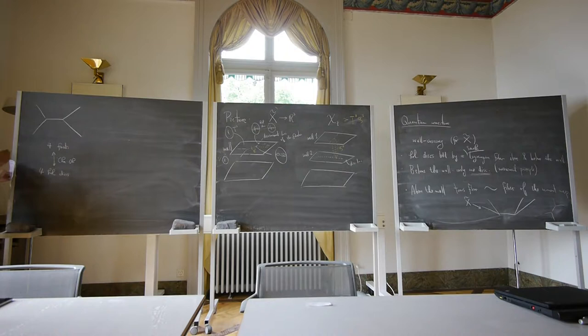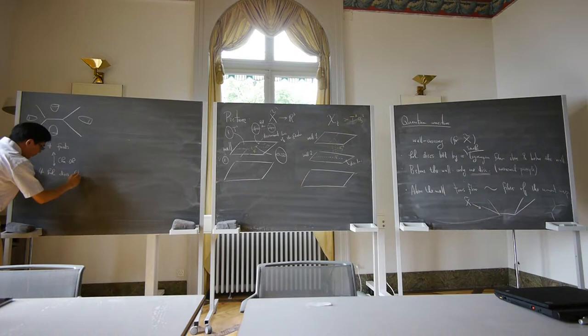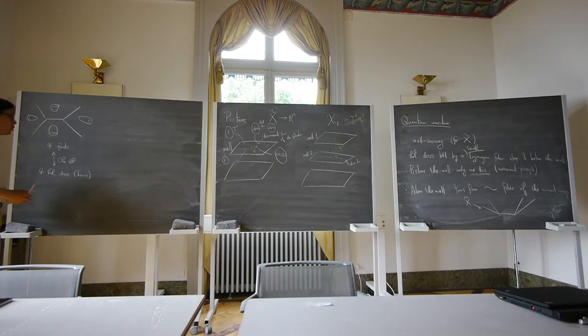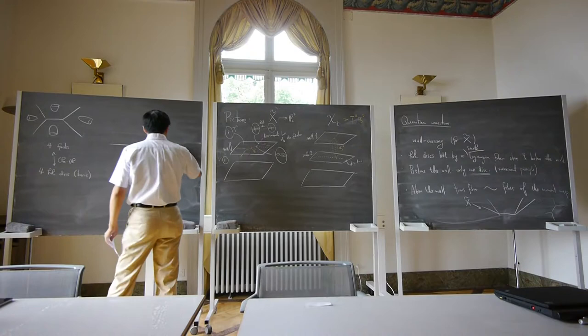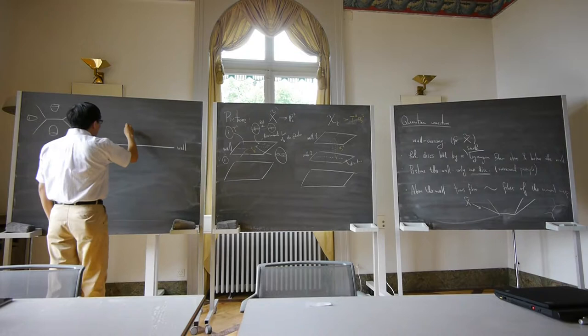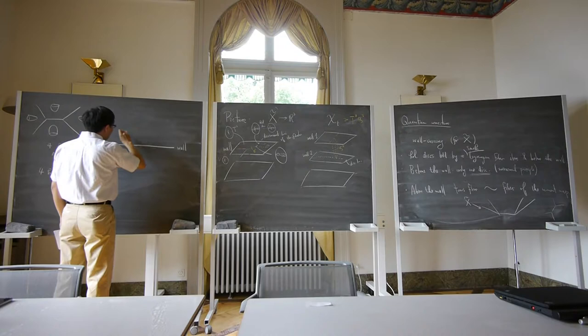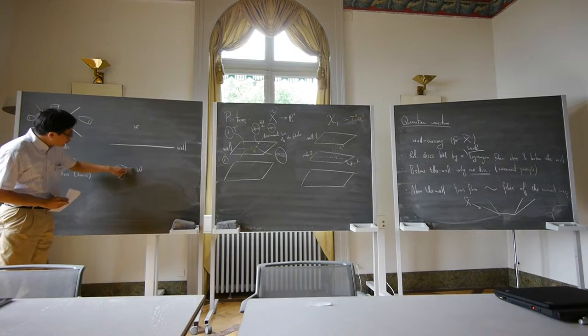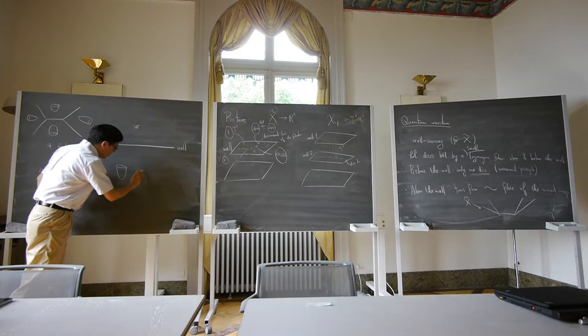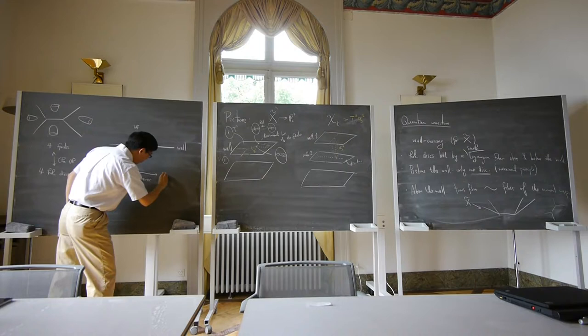Below the wall there is only one disk, corresponding to a monomial W in the mirror. Above the wall there are four disks corresponding to four monomials. If you take the mirror, those four monomials are W·X + W·Y + 1 + Q·W·X·Y, where Q is the Kähler parameter corresponding to the size of the holomorphic sphere in the ℙ¹. The wall-crossing factor is 1 + X + Y + Q·X·Y, and W can be pulled out. So above and below the wall differ by this factor.